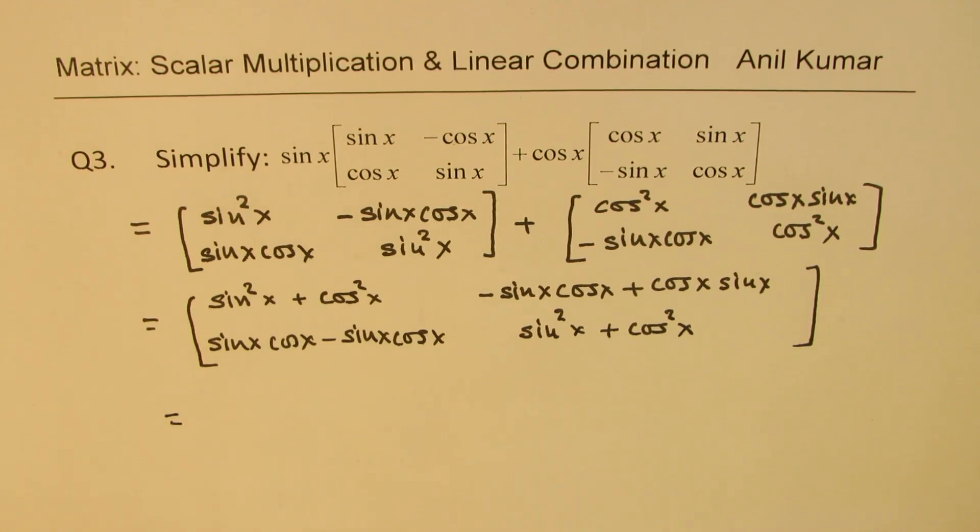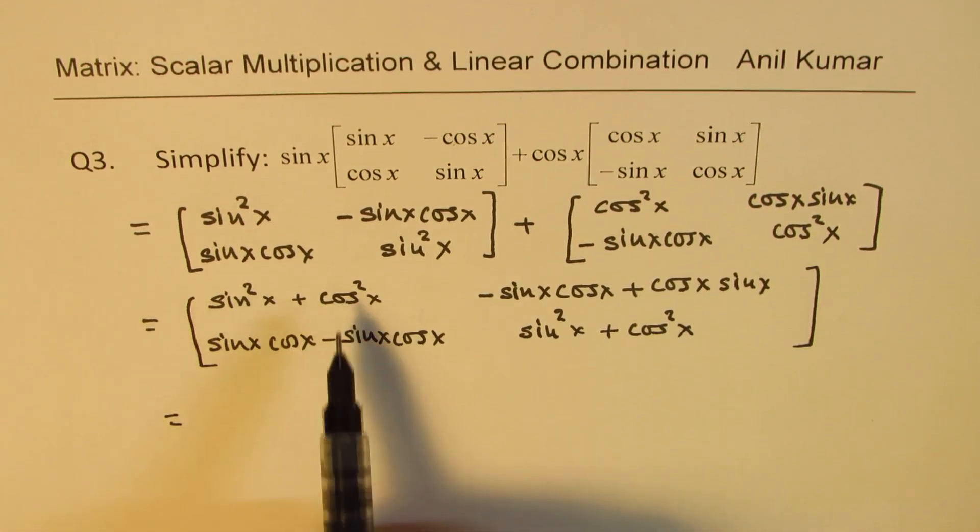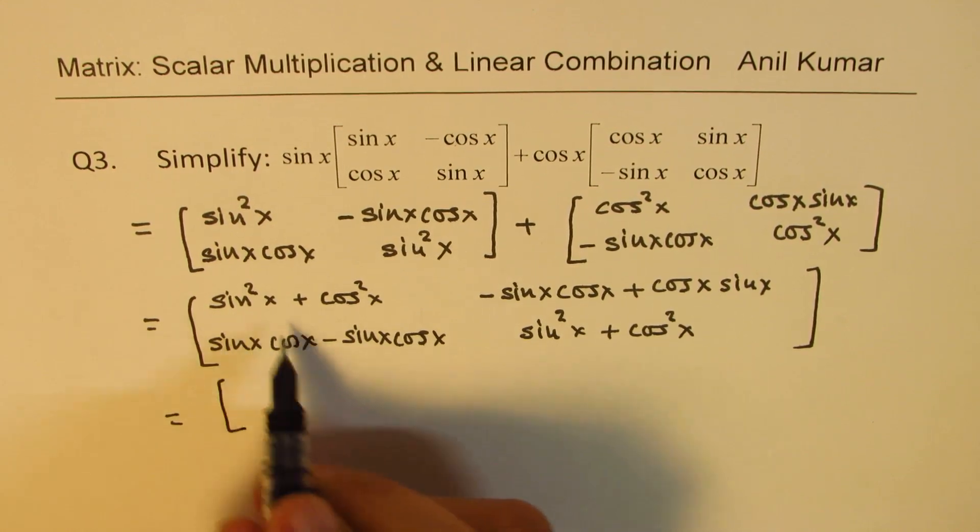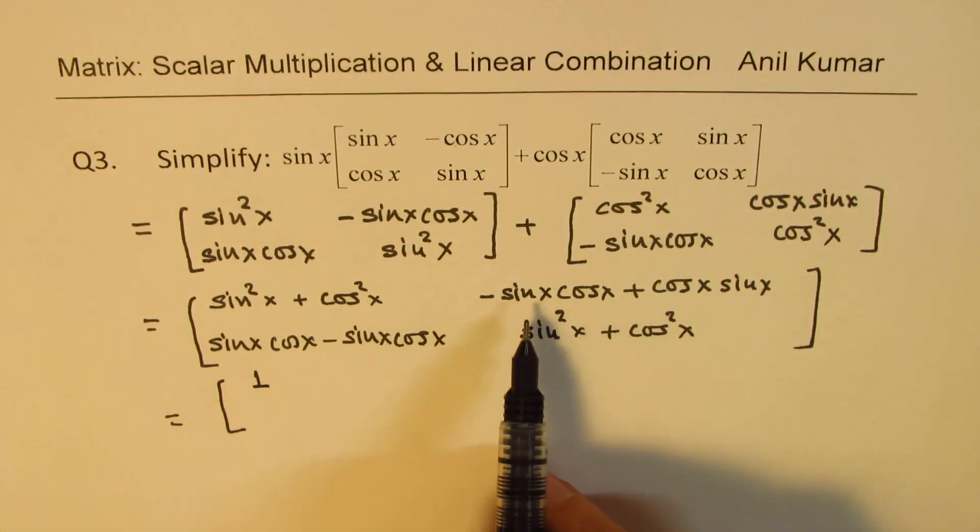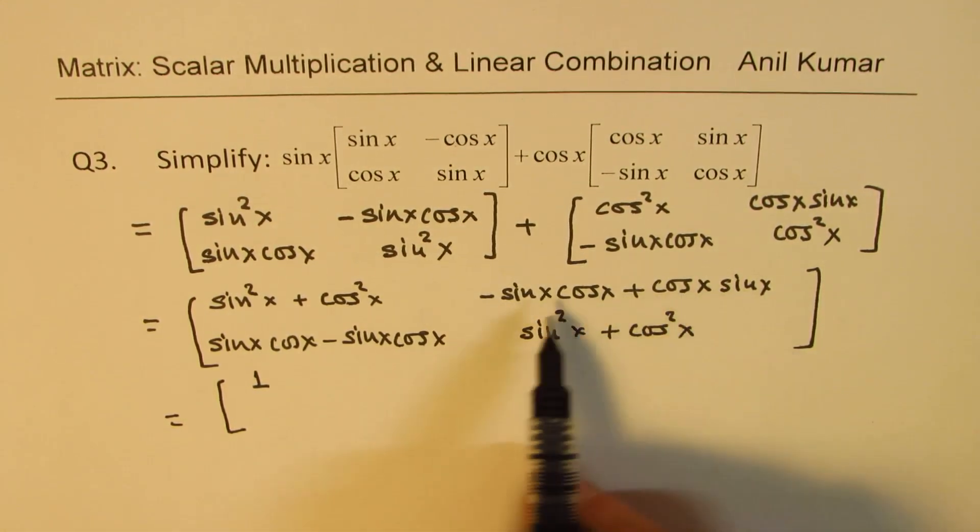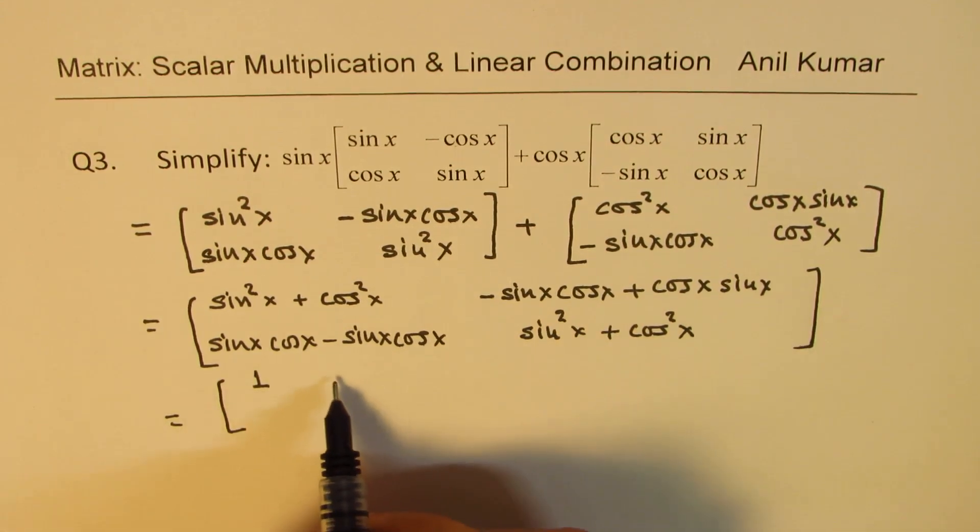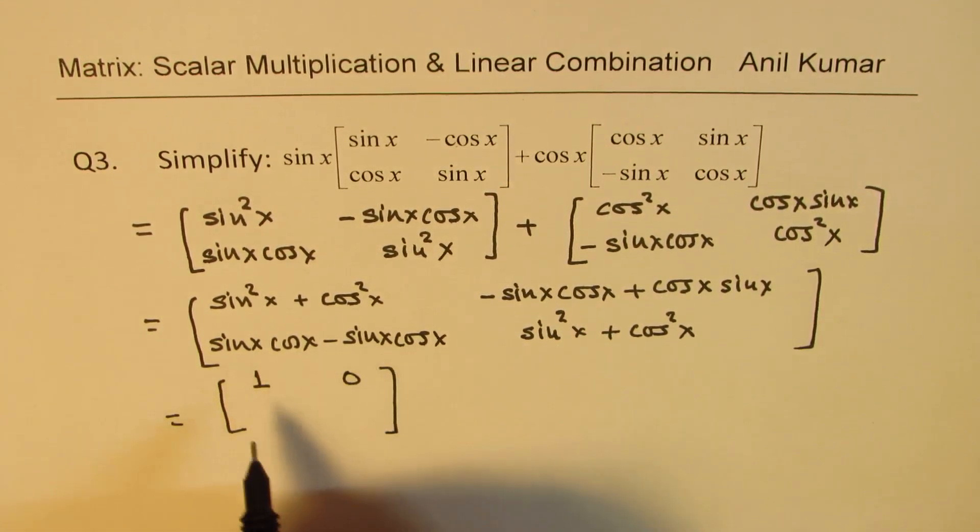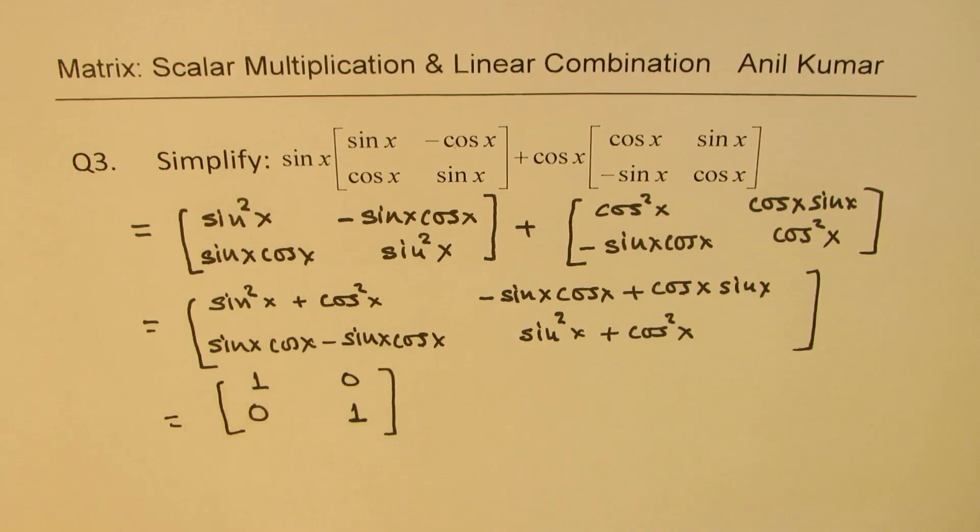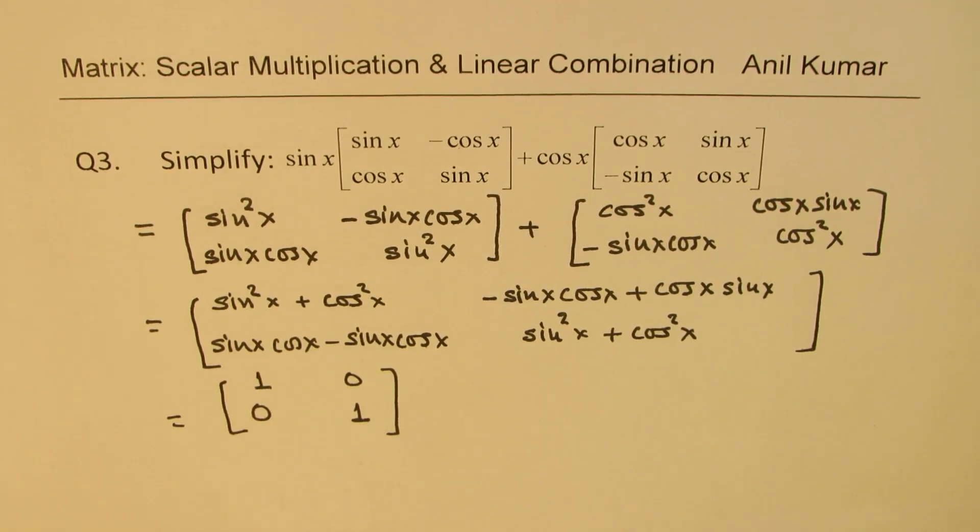Now we know sine squared x plus cos squared x is one, so we can write one here. Here we have sine x cos x minus, that becomes zero. This one is again zero and here we get one. Do you see that? So we get identity matrix. We get our matrix with diagonal ones, other things are zeros. So that is what we get, so that is a very important result which we might use later.